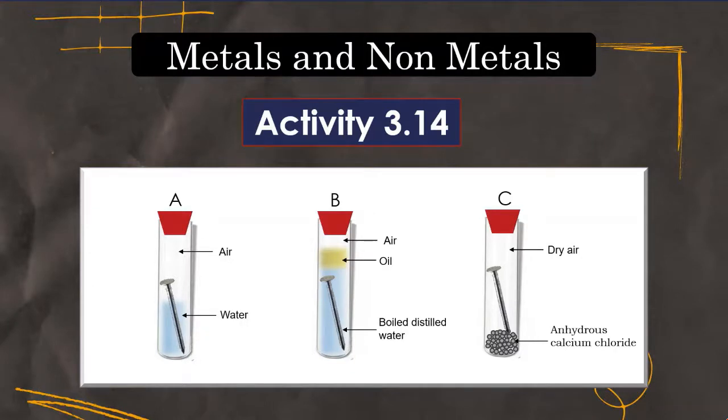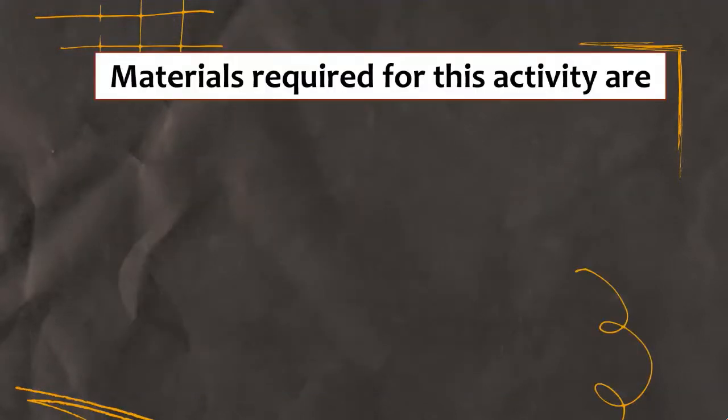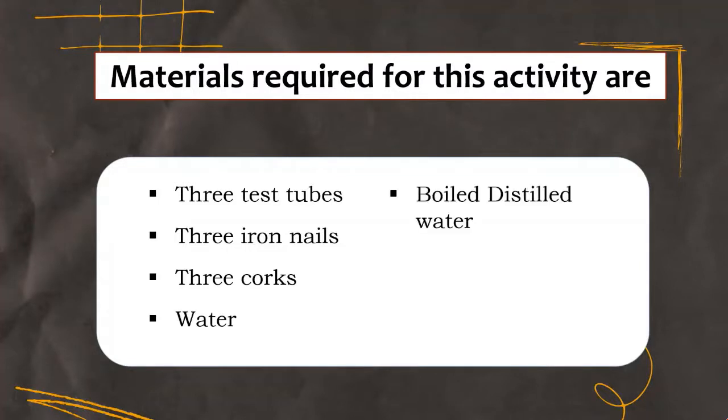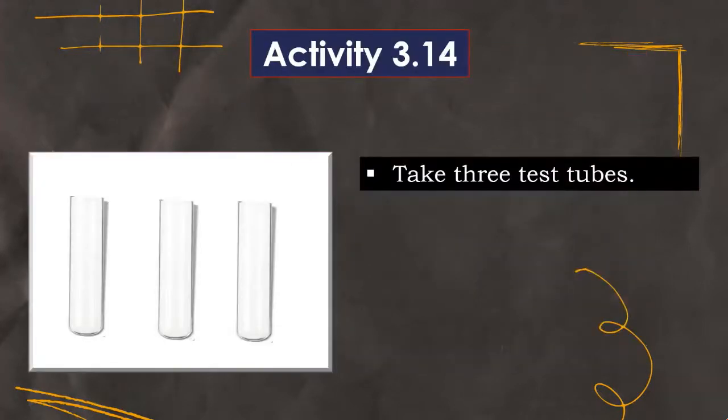Activity 3.14 is from the chapter Metals and Nonmetals. To perform this activity, we require three test tubes, three iron nails, three corks, water, boiled distilled water, oil, and anhydrous calcium chloride.